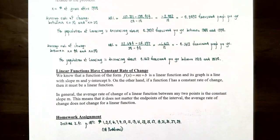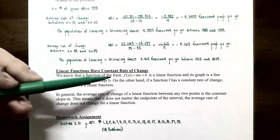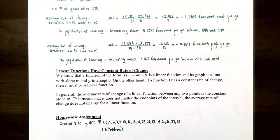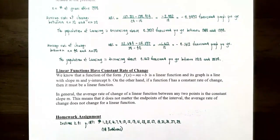Linear functions have a constant rate of change. A function of the form f of x equals mx plus b is linear, with slope m and y-intercept b. Conversely, if a function has a constant rate of change, it must be linear. The average rate of change of a linear function between any two points is always the constant m, regardless of which interval endpoints you choose. In the next video we'll talk about linear functions and models.